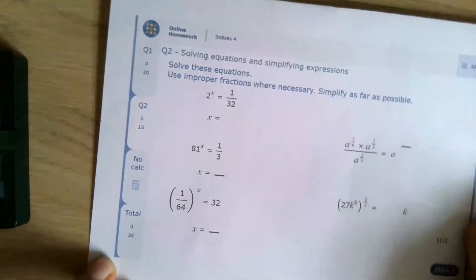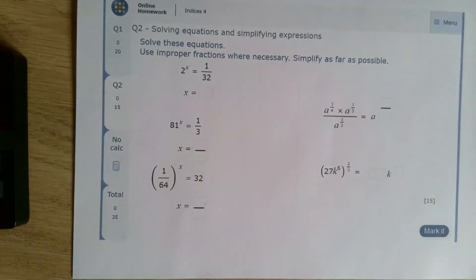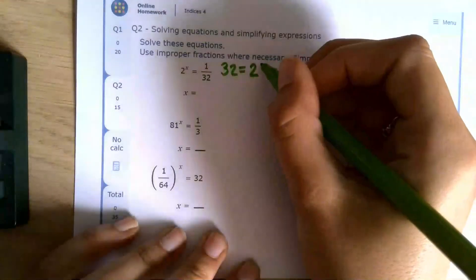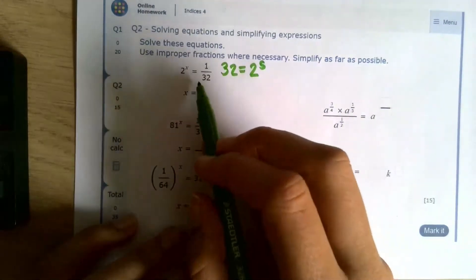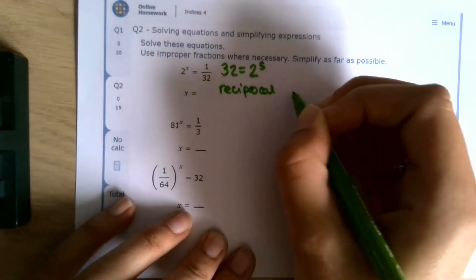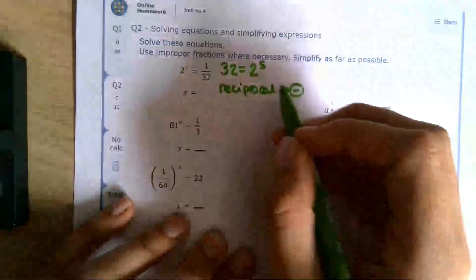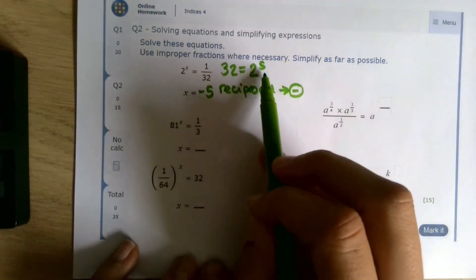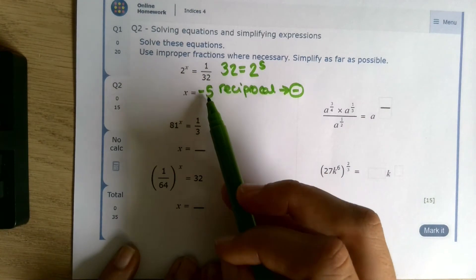This has become a much more common GCSE question in recent years, so I'm really glad we've got a chance to look at it here. We're doing it in the same kind of way that we did before. So think about 32. 32 is 2 to the power of what? Well, it's 2 to the power of 5. Is that 32? No, it's 1 over 32. So because it's reciprocal, that means it must be negative. So it's not going to just be 5, it's going to be negative 5.